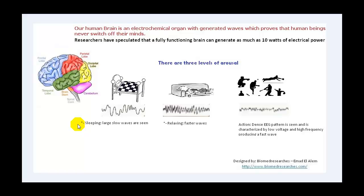Researchers have speculated that a fully functioning brain can generate as much as 10 watts of electrical power, though this is only a speculation. There are three levels of arousal. The first is sleeping, the second is relaxing, and the third is action. In sleeping arousal, large slow waves are seen. In relaxing, the waves become faster. But in action, a dense EEG pattern is seen, characterized by low voltage and high frequency producing fast waves.